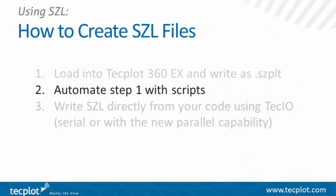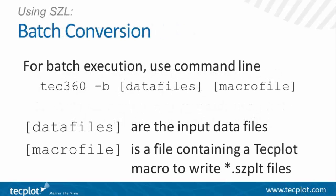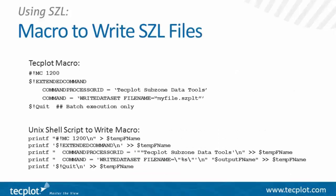If you want to automate that, TechBot has a batch command capability. Using the command line, you can just say Tech360 with a dash B, specify the data files, and then a macro file — because you'll need to run a macro file to actually write the SISL file. Here's a simple example of what the macro would look like. You can generate this yourself just by recording if you want to see how it looks. Basically it specifies the TechPlot subzone data tools add-on that is being used.